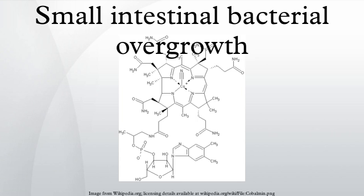SIBO also causes an increased permeability of the small intestine. Some patients may lose weight. Children with bacterial overgrowth may develop malnutrition and have difficulty attaining proper growth. Steatorrhea, a sticky type of diarrhea where fats are not properly absorbed and spill into the stool, may also occur.